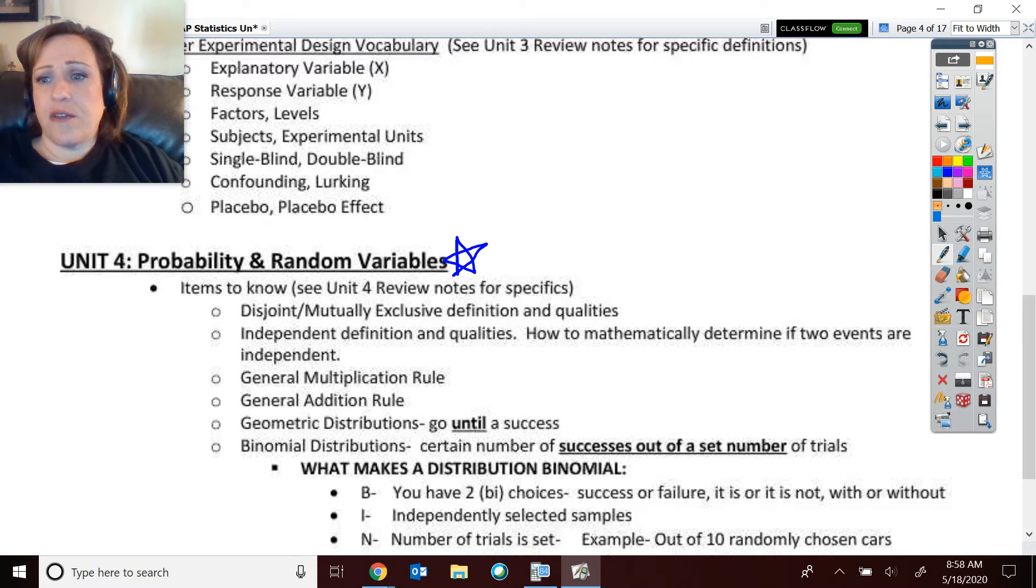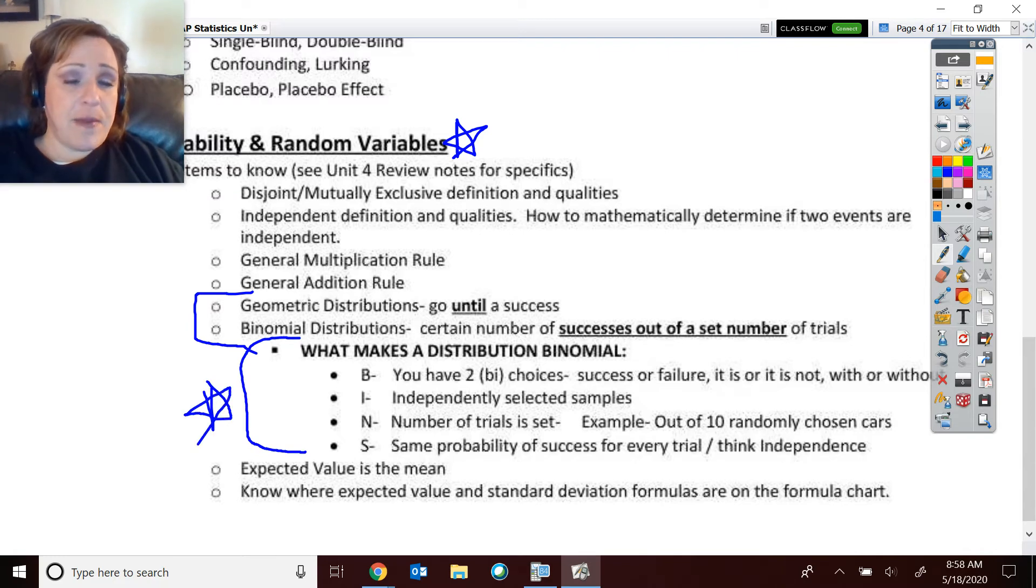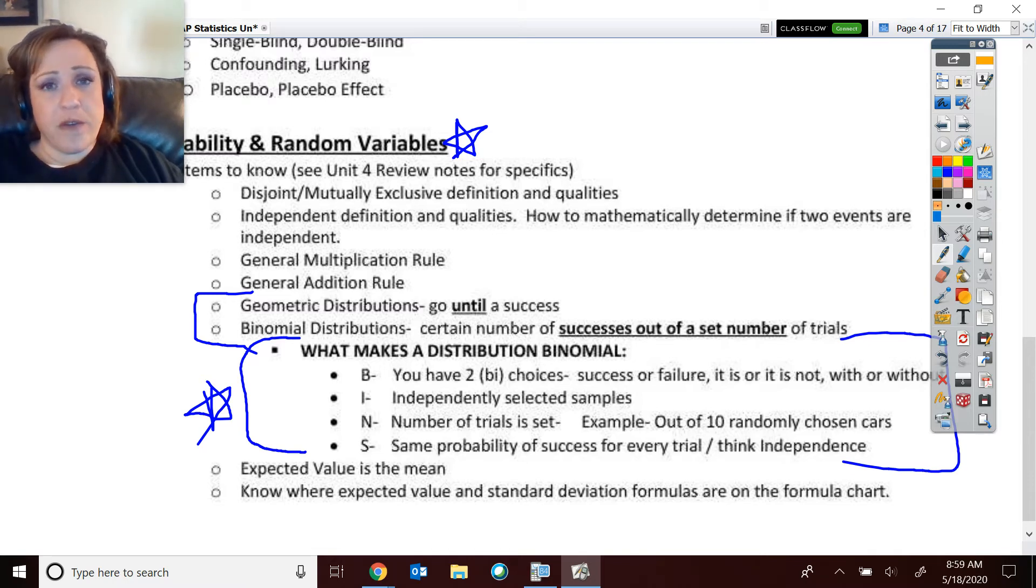I do want to point out to you that checking for independence on the formula chart is very important, and I actually added that, and I'll show you in a minute. Now, remember, geometric distributions go until a success. Binomial is like, out of a set number of trials, how many successes. So on one of the free responses that we had in AP Classroom, one of the questions, or maybe this was just a sample AP question that I had come across last week when we were doing this.